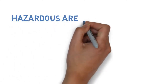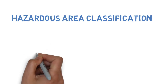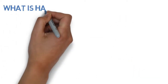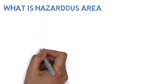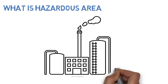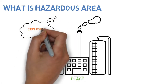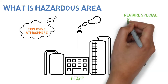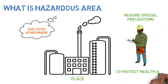What is Hazardous Area? Let's see inside this video. A place in which an explosive atmosphere may occur in such quantities as to require special precautions to protect the health and safety of the workers concerned is considered to be a Hazardous Area.